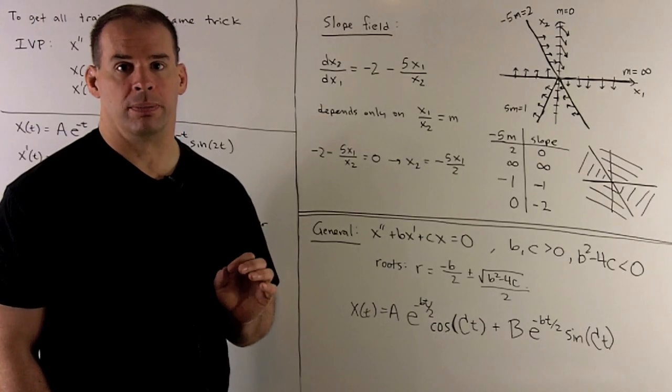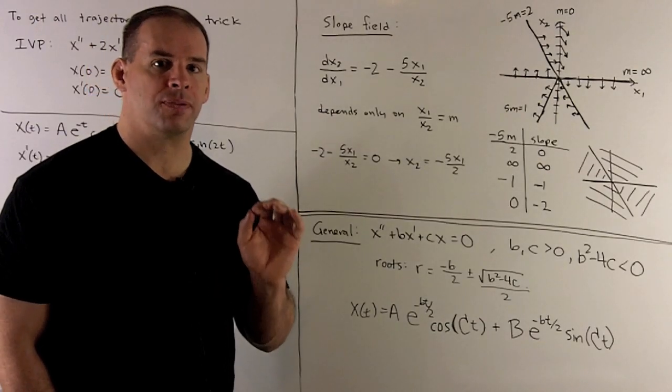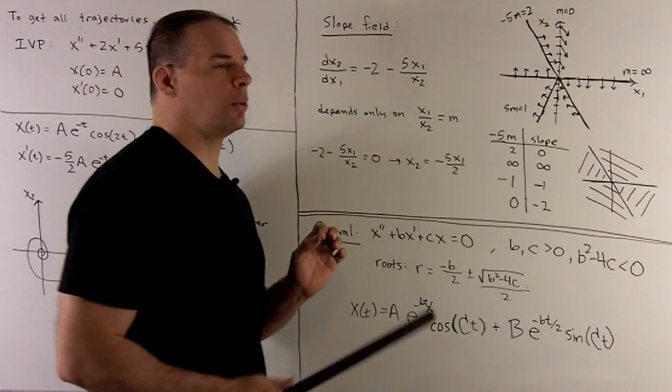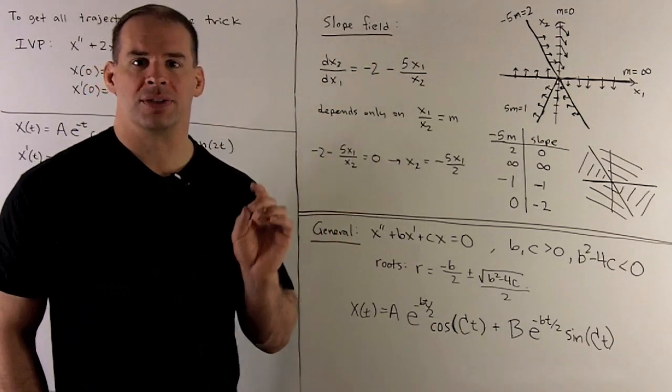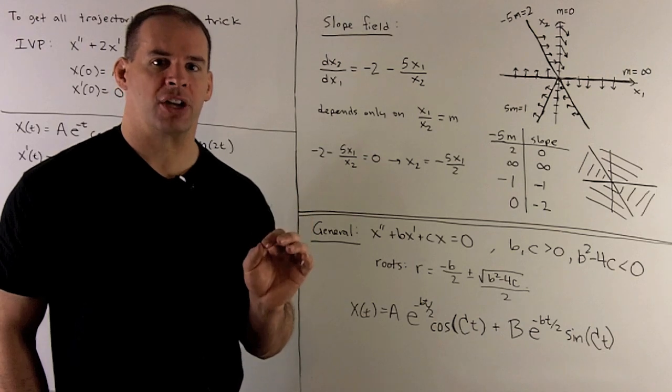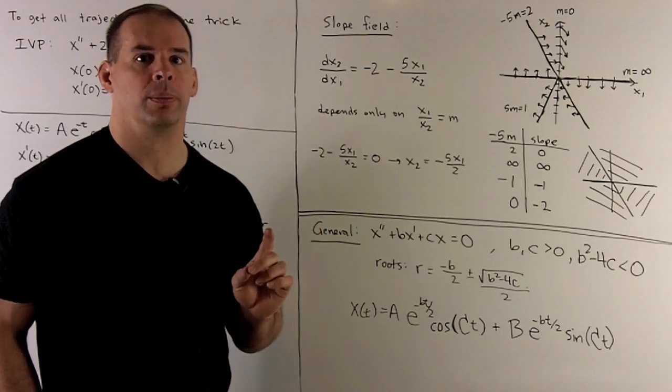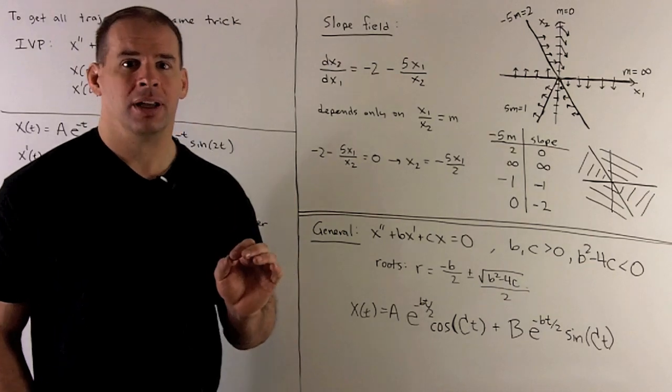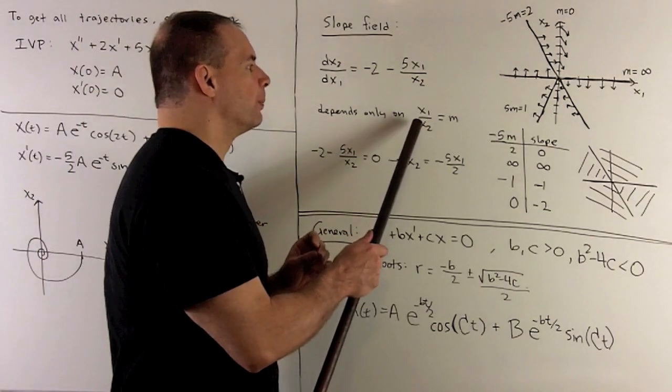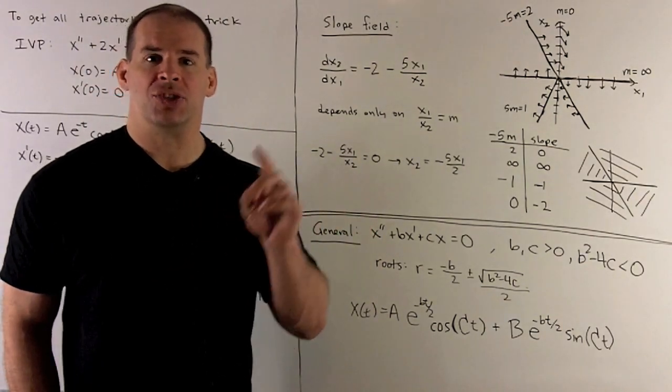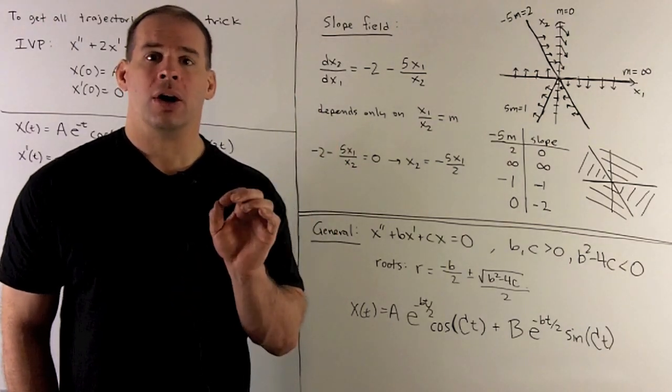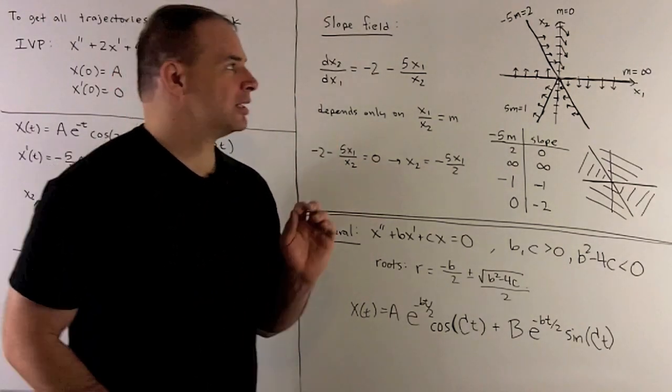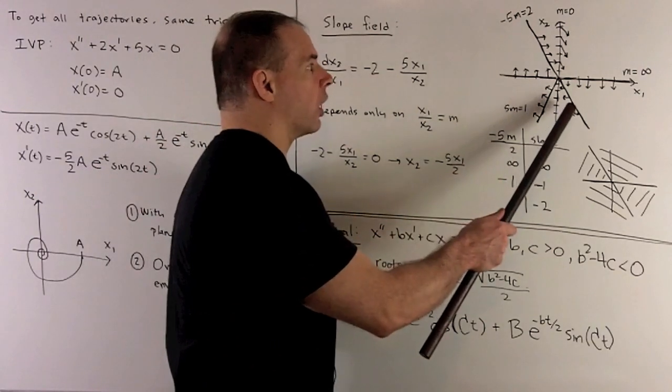Let's get another look at our slope field. So, our formula for slope was minus 2 minus 5X1 over X2. Here, the slope is for the tangent line to the trajectory at the point X1, X2. Now, if I'm on a line going through the origin, then X1 over X2 is going to be fixed. So, that means on those lines, our vectors coming from the slope field are all going to point in the same direction, depending on what side of the origin that you're on.